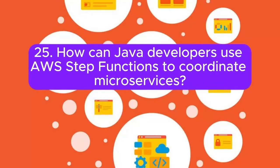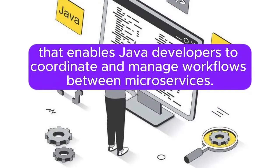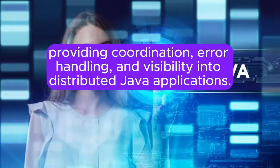Question 25: How can Java developers use AWS Step Functions to coordinate microservices? AWS Step Functions is a serverless orchestration service that enables Java developers to coordinate and manage workflows between microservices. It allows the creation of state machines to define and execute complex workflows, providing coordination, error handling, and visibility into distributed Java applications.